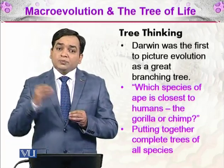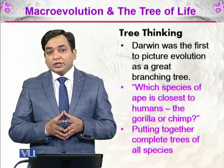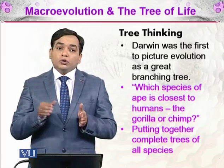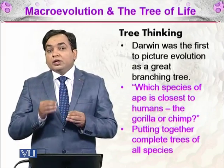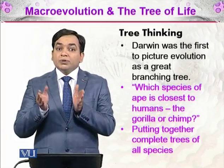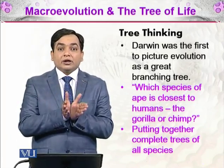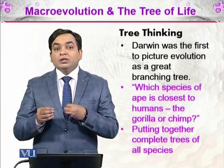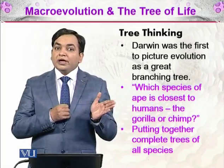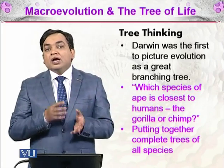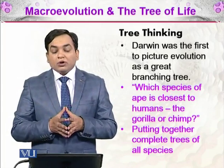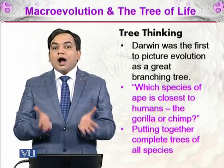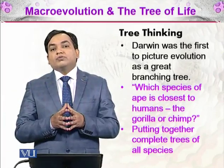On each branch there is a particular species of an organism. The branching is also relative — two related organisms will be much closer on that tree than two unrelated organisms. We will be much closer on a branch to a chimpanzee than to a horse. That is the tree of life.